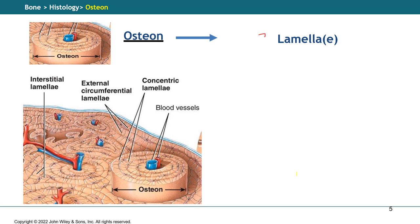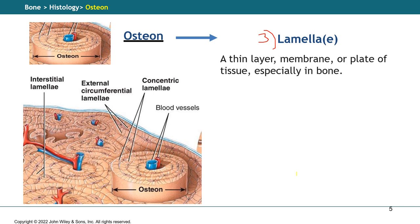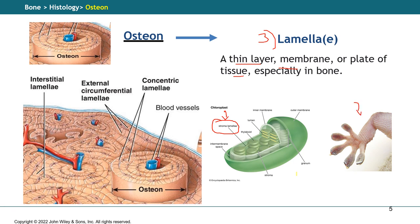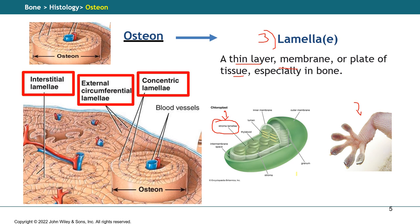Now we're going to talk about the third structure: the lamella found in the osteons. There are three types of lamellas in the bones. A lamella is a thin layer, or a membrane, or a plate of tissue — here we are talking about bones. If you took introductory biology courses, at the cellular level you can find lamellas in the chloroplasts. You can also find lamellas in the fingers of some animals that allow them to attach to surfaces. In the osteons, these thin layers are found in three types: concentric lamella, external circumferential lamella, and interstitial lamella.